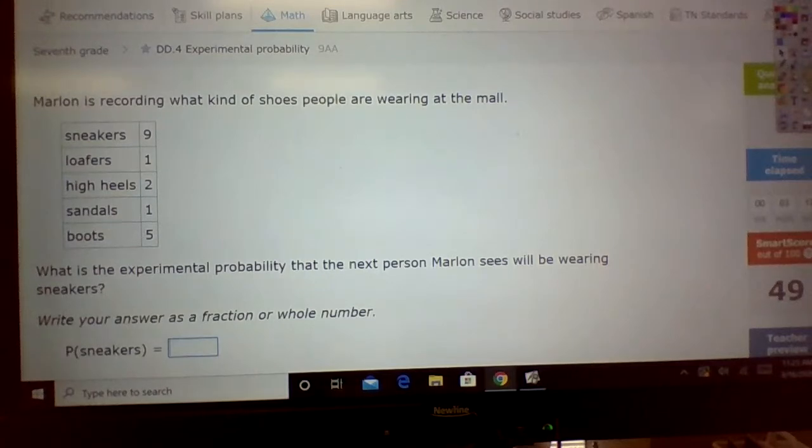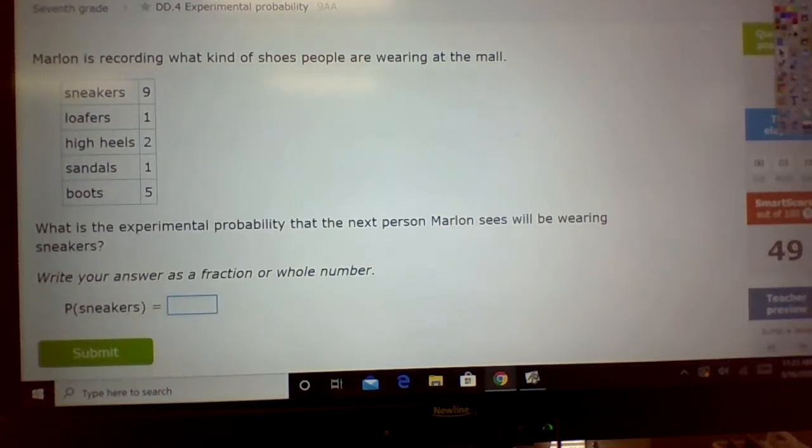This one says, Marlin is recording what kind of shoes people are wearing at the mall. First of all, you're going to have to find the total shoes. So, you add them up. Nine plus one is equal to ten. Plus two is twelve. Plus one is thirteen. Plus five is eighteen. Eighteen goes on the bottom.